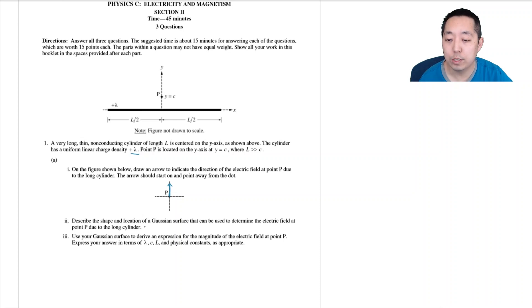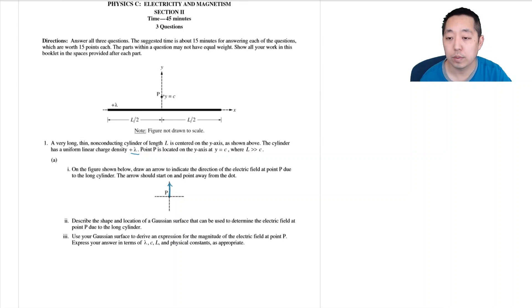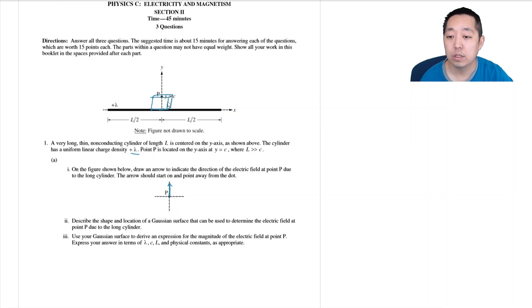Describe the shape and location of a Gaussian surface that can be used to determine the electric field at point P due to the long cylinder. I'll just draw it. Because the cylinder has rotational symmetry — if I rotate it, the E field just circles around — I pick a cylinder with radius equal to C. From the side it looks like a thin disc, and in all directions the E field has the same value due to rotational symmetry.